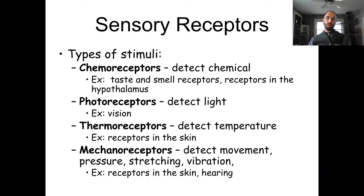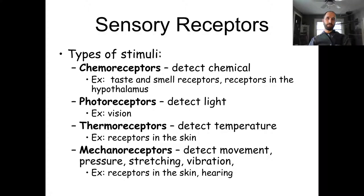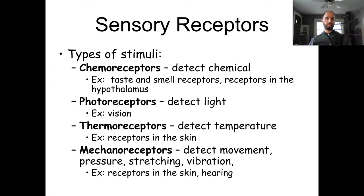There are a few different types of functional receptors. Chemoreceptors detect chemicals — when detecting the internal environment like your pH, or external chemicals like taste and smell. Photoreceptors detect light, and that's just for vision — the only place we can do that.